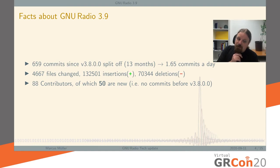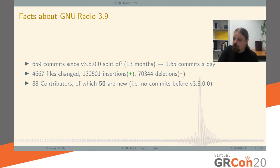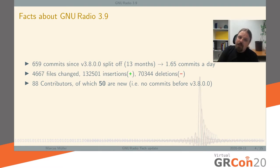We have 88 contributors between 3.8 and the current state of master, of which 50 are new — they have no prior commits that I could find without cross-checking email addresses. This is a rather healthy community because, although this is a highly technical project, we're attracting people to change things and a lot of them are really sticking with it.